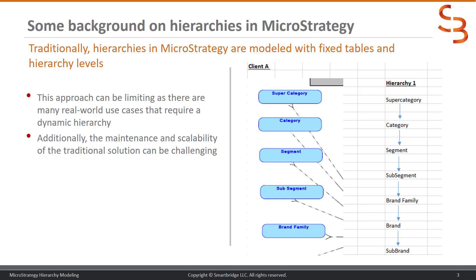A lot of times hierarchies have interrelationships between different levels, and the number of levels in a hierarchy doesn't have to be constant — it can have a lot of dynamic features. That poses a challenge in MicroStrategy because the tool is not by default designed for that kind of dynamic hierarchy. In addition to that modeling challenge, traditional approaches have a lot of maintenance and scalability issues, since we are always tying objects to certain columns in a table, which creates a lot of maintenance overhead.